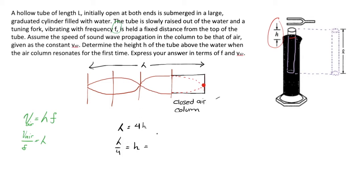The desired height becomes v_air over f over four, which is one way of expressing it, or perhaps preferably, one fourth times the ratio of v_air to the frequency. And there is the required height for the first time that this open tube will resonate at the frequency that is fixed by the fork.